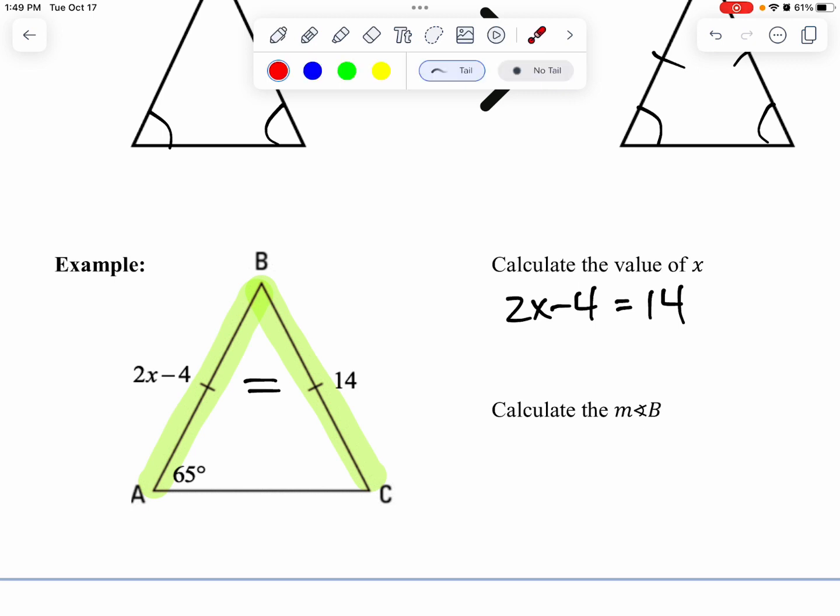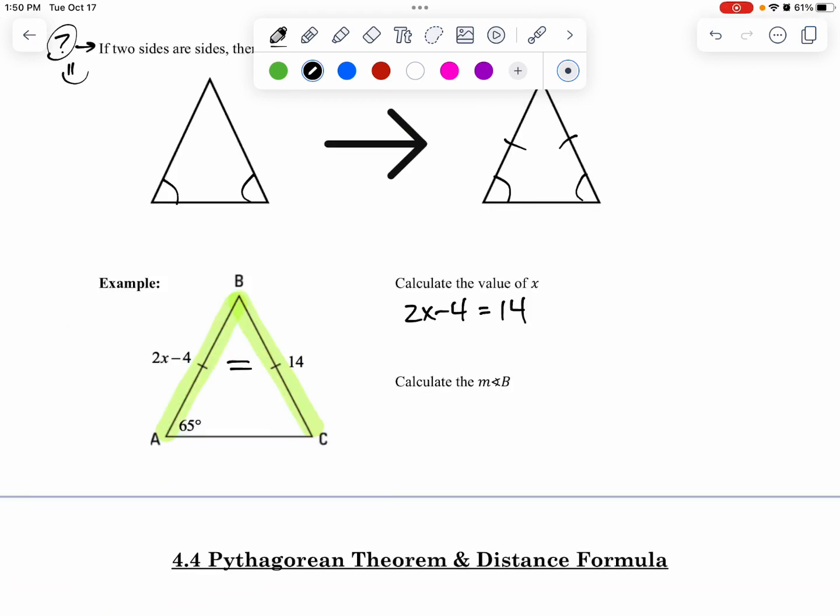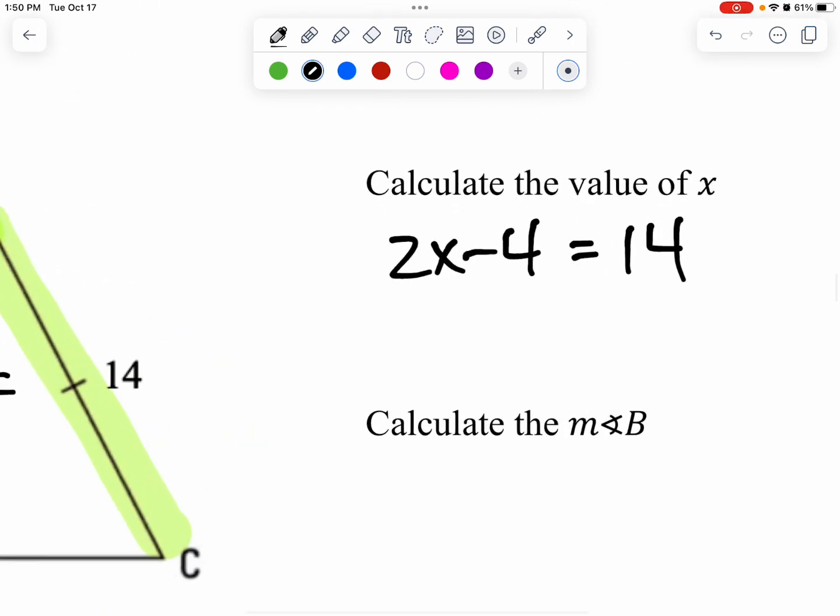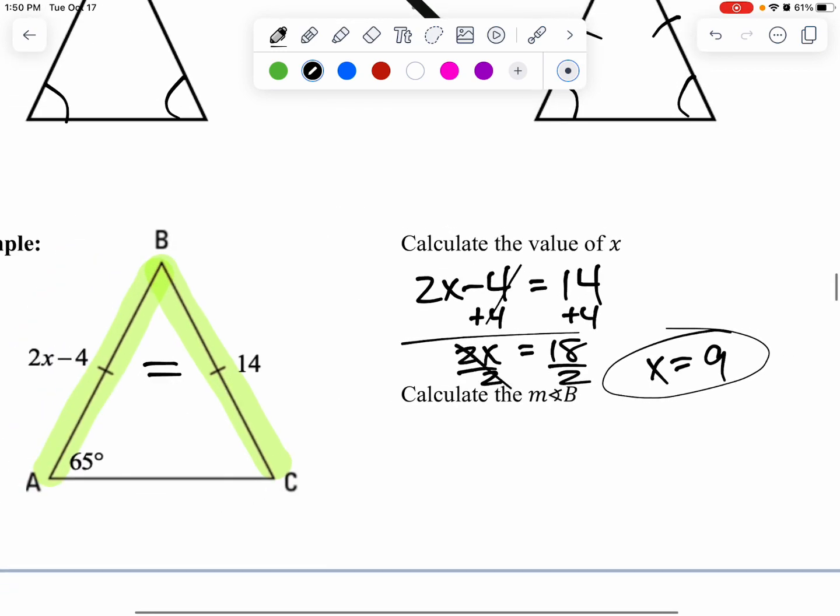So I'm equaling my two legs together because it's an isosceles triangle, and now I just have to solve this thing right now. So I am going to just solve this equation. I'm going to add 4 on both sides. That gives me 2x equals 14, and 4 is 18. I'm going to divide 2. I know a lot of you already know what the answer is and knew it for a while, which is fantastic. I got x equals 9. Got to cancel my twos there.